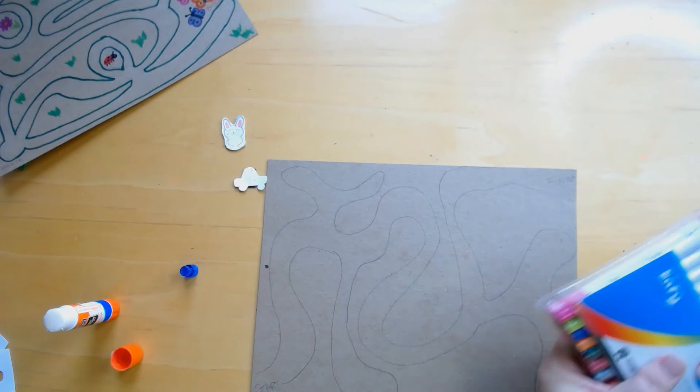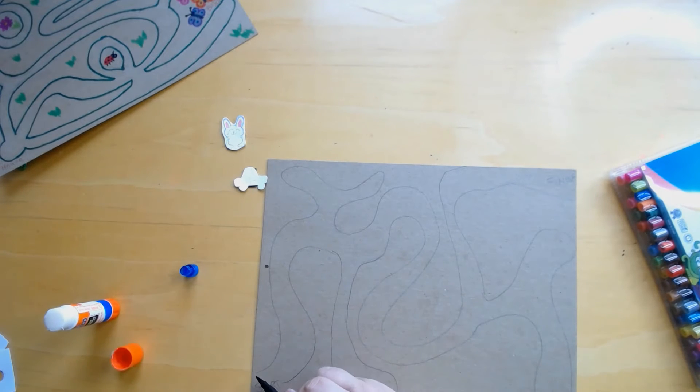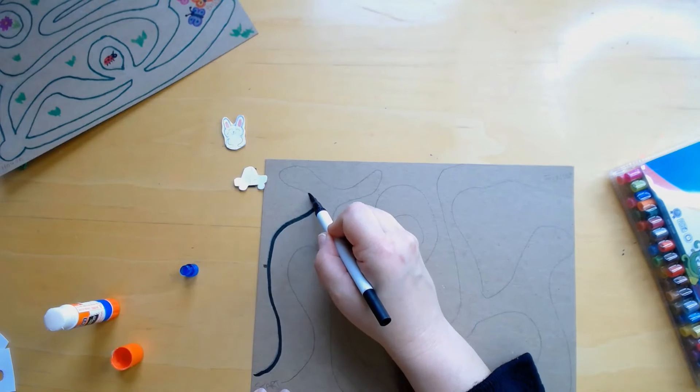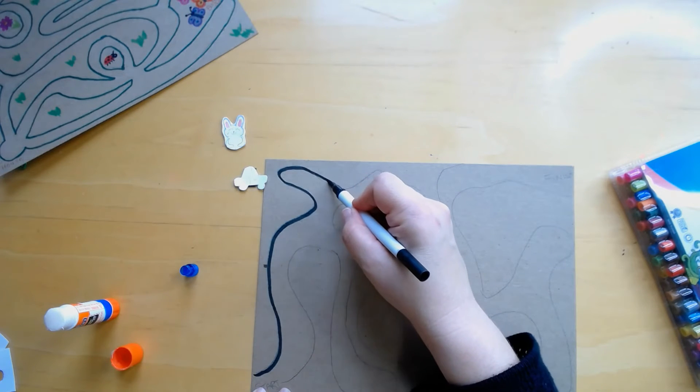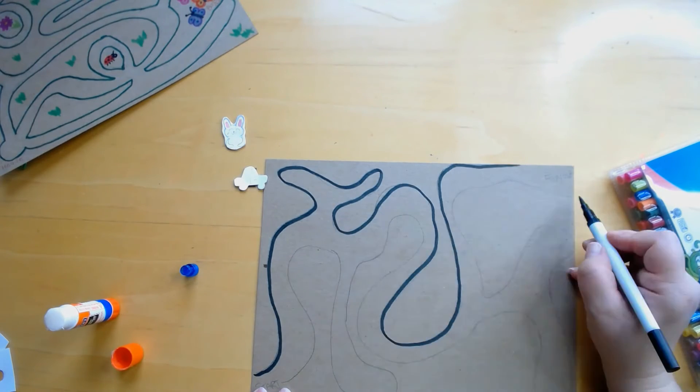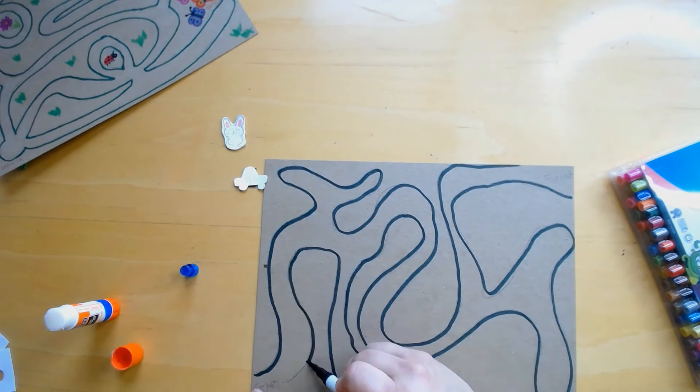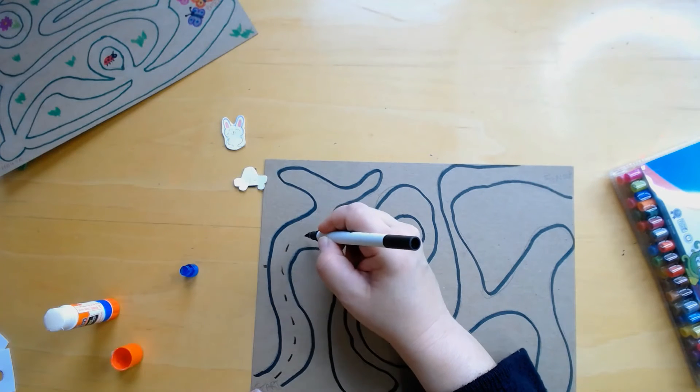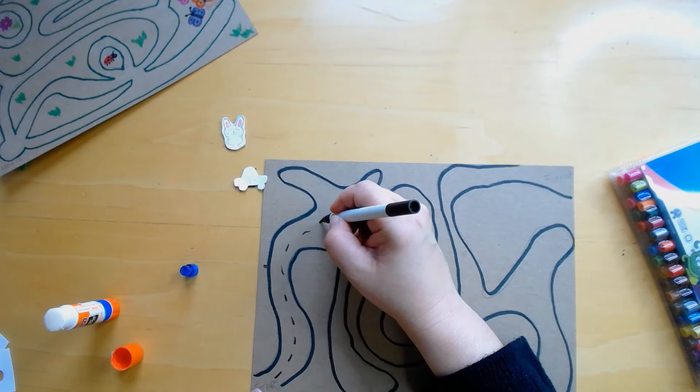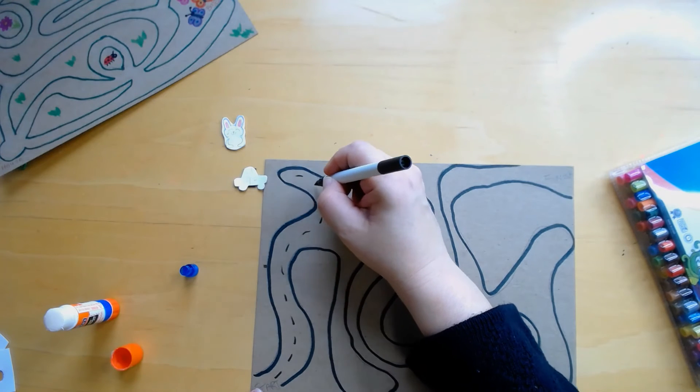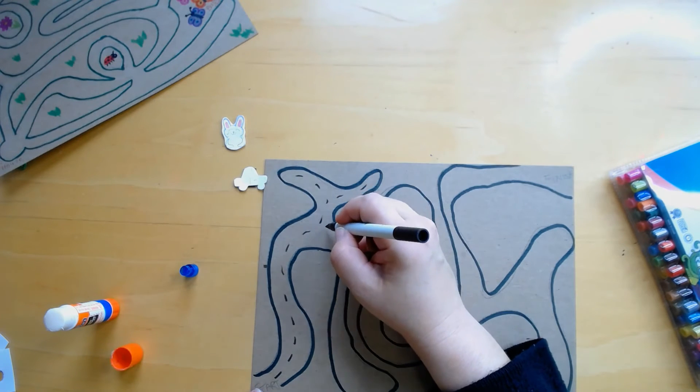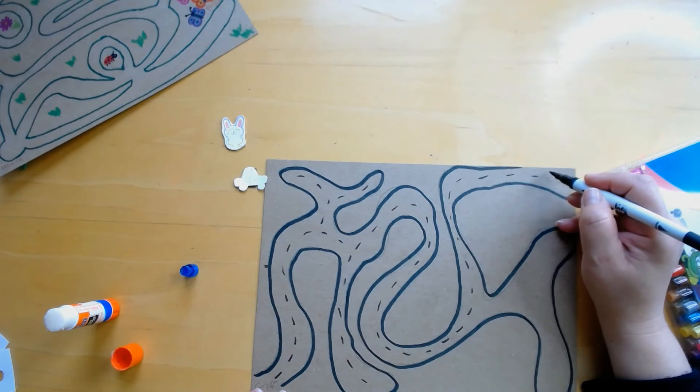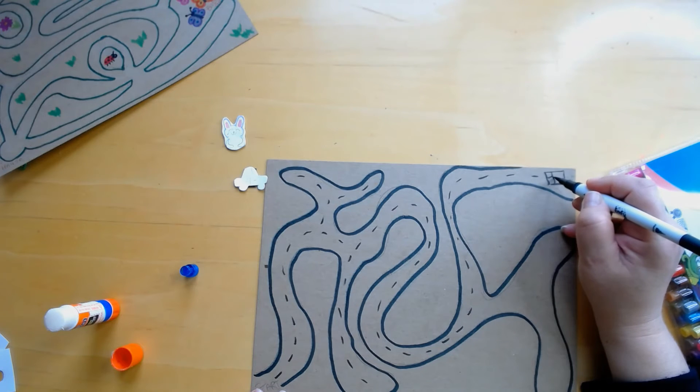The first thing I'm going to do since it's a road, I'm going to outline in black all around the lines that I made. Oh, and because it's a road I'm going to make a line here like this, that's like the dotted line in the middle of the road, right? And this is the finish line and I'm going to make a checkered flag.